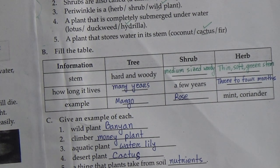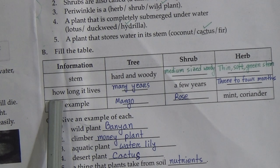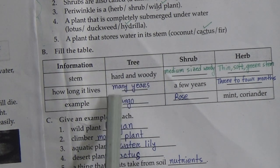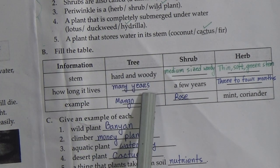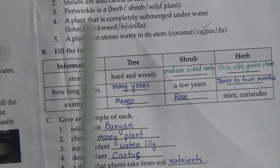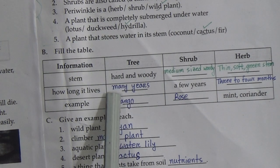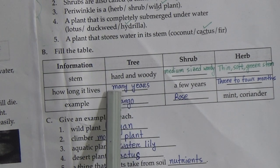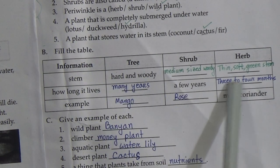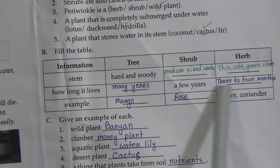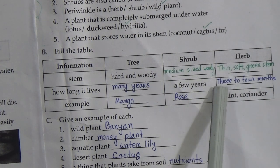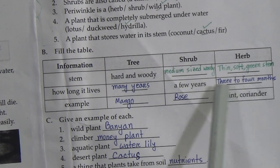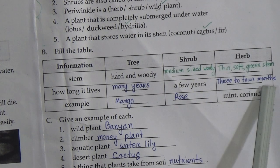Now here is information about how long a plant lives. A tree lives many years. We write here 'many years.' And for herbs, we write three to four months.